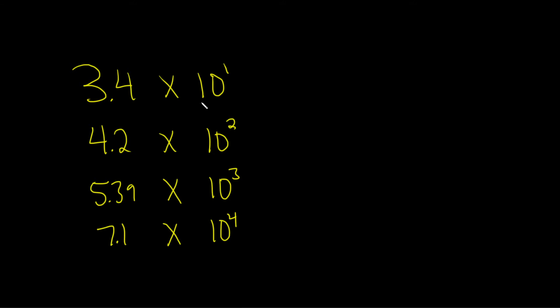So you have 3.4 times 10 to the 1. So 10 to the 1 has one zero. So because it has one zero, we take this decimal and we move it to the right one time. So the answer here is 34.